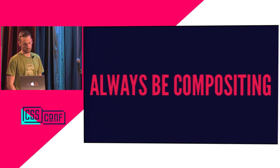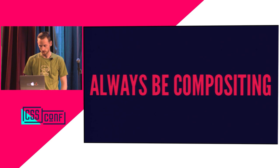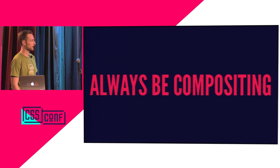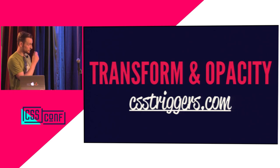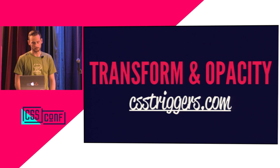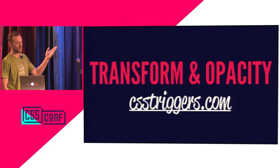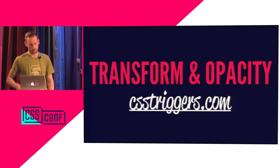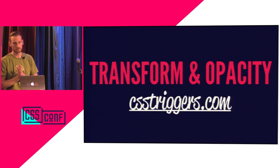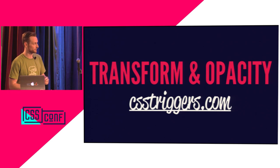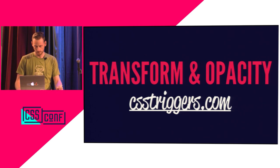The moral of the story is you always want to be compositing. If you can avoid anything that causes a paint or a reflow, that's where you'll have performance at its best — it's handled by the GPU which really excels at that scenario. The two properties that are safe to use are transform and opacity. Everything else is detrimental. Transform has rotate, skew, translate, and scale. A really good website is CSS Triggers — you can type in a CSS property and it will tell you whether it causes a layout, a paint, or just a composite. Only transform and opacity are the really fast ones.